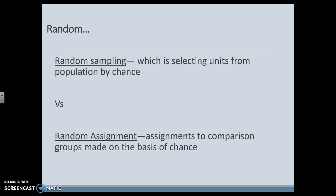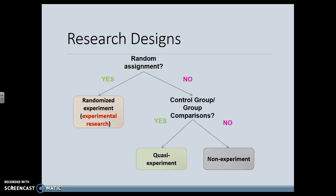Random assignment means that once we have our sample, we are then assigning them to comparison groups — they are randomly chosen and randomly assigned to groups. Research design all depends on random assignment. If we can randomly assign, we can do an experimental design. If we cannot randomly assign but still have random sampling, we can do a quasi-experimental design. If we don't have a control group, we can do non-experimental research, and you can get away with less random sampling there as well.